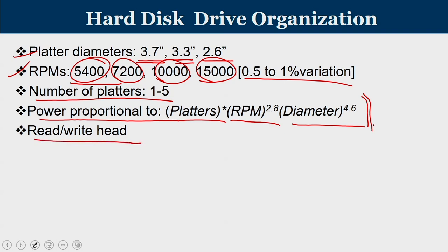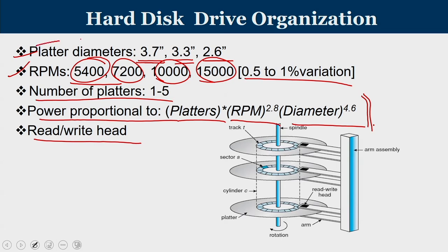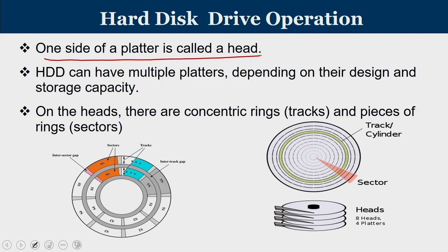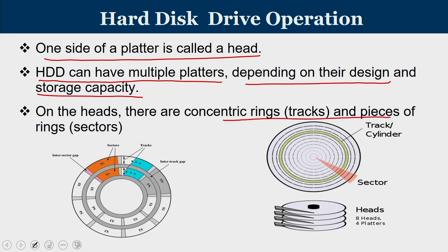The read and write head is associated with the arm assembly. Generally, the platter diameter is the diameter of the platter surface, and the spindle rotates at RPM values of 5400, 7200, and 10000. We have different platters — platters 1, 2, 3 — with read-write heads associated with each. One side of a platter is typically known as a head. On each head there are concentric rings or tracks, and pieces of each ring are known as sectors. Between each sector is an inter-sector gap, and between each track is an inter-track gap.